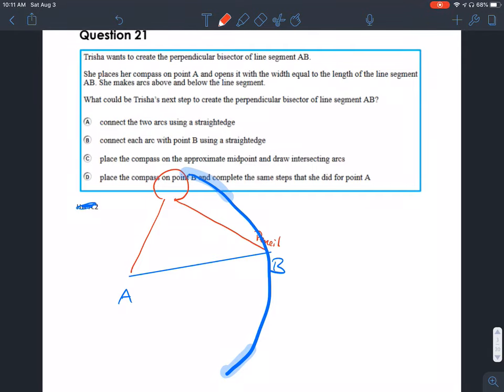So we had the pointy part at A, placing the compass. The pencil was at B. Now we're going to do the same thing on the other side. Place the compass on point B and complete the same step that she did for point A.